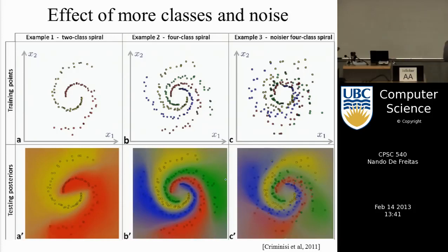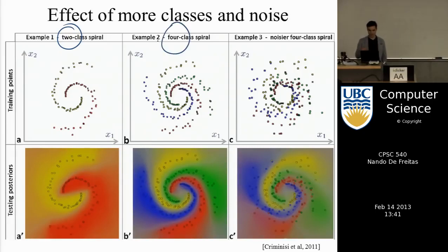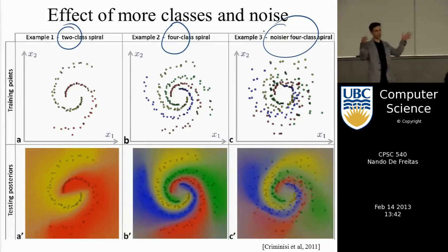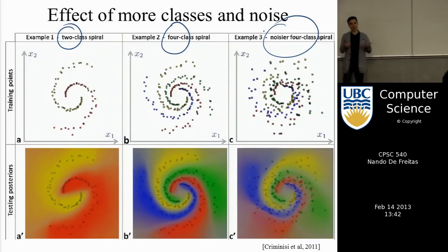Another nice property is that the number of class labels doesn't matter — trees work well regardless of whether there are two, three, four, or ten classes. With two classes the trees build a nice decision surface; with four classes they split points in a very nice way. The next figure shows what happens as you add noise — when classes overlap more. The right-hand spiral is the kind of noisy, overlapping data you typically get in real life, and even there random forests give a pretty good solution.